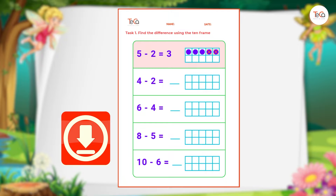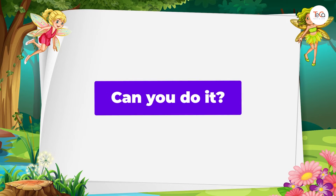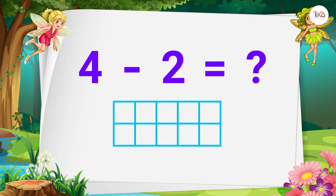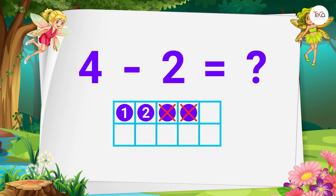When you finish, replay the video to check your answers with me. First: four minus two equals? We draw four dots, then cross out two dots. Let's count the dots left to find the difference — here we have one, two. Two dots left, so four minus two equals two.